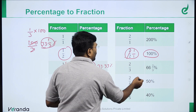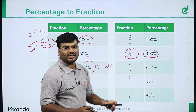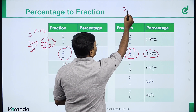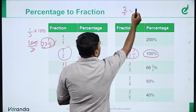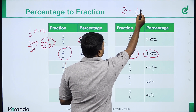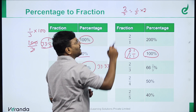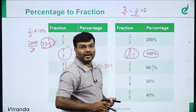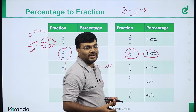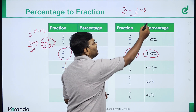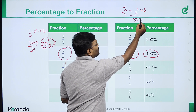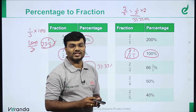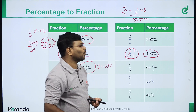That gives us 2 by 3. 2 by 3 is 66 2/3 percent. 2 by 3 means 1 by 3 multiplied by 2. Since 1 by 3 is 33.33%, multiplying by 2 gives 66.66% or 66 2/3 percent.